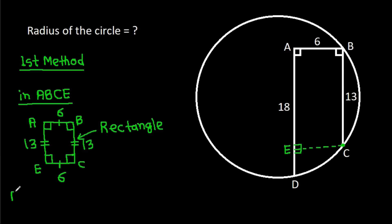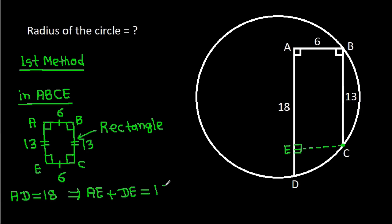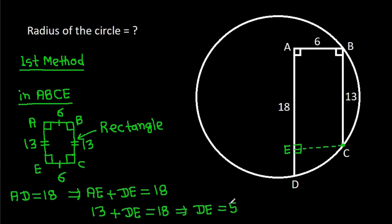And we have AD is 18. And AD = AE + DE = 18. And AE is 13 plus DE equals 18. So DE will be 5.